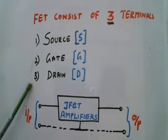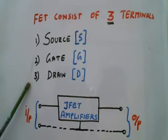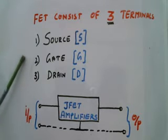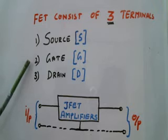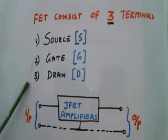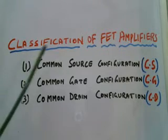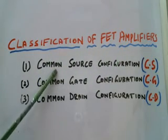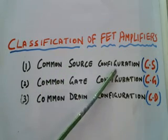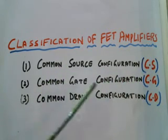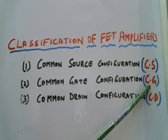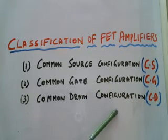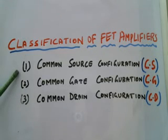This gives us three configurations: common source configuration, common gate configuration, and common drain configuration — similar to common emitter, common base, and common collector in BJT. These are classified as CS mode, CG mode, and CD mode. We will discuss common source first, then common gate, then common drain.